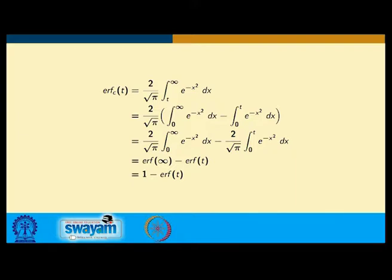This is nothing but erf(∞) − erf(t). Since erf(∞) = 1, the complementary error function is 1 − erf(t).